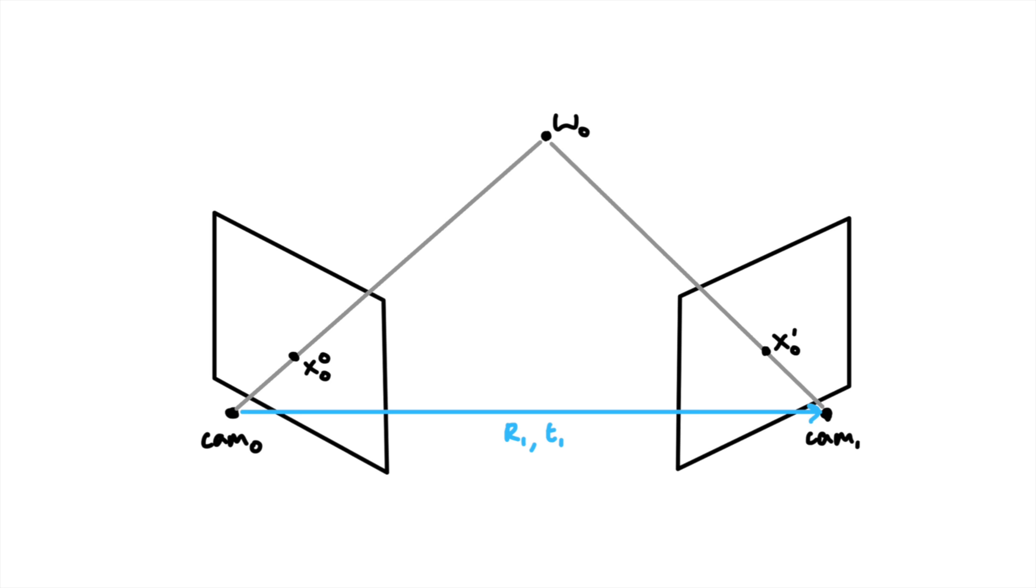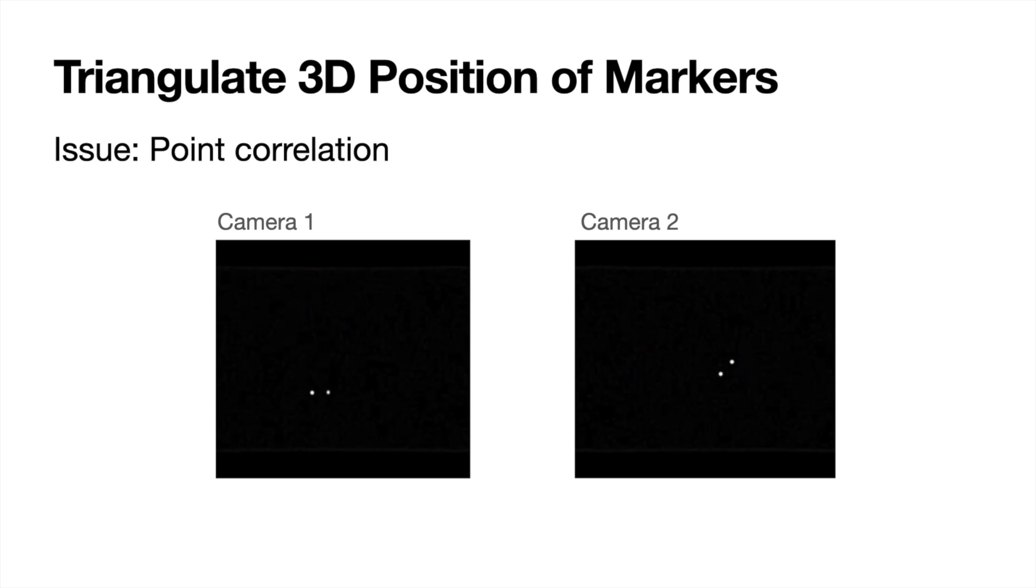Now that we have all of the camera poses, we can start triangulating the points. Finding the location of one point is easy, we're essentially just projecting the rays out from each camera and finding out where they intersect. And this can be done with something called the direct linear transform method. The hard part is when we have lots of infrared markers in our scene. How can we correlate the dots in camera 1 with the dots in camera 2?